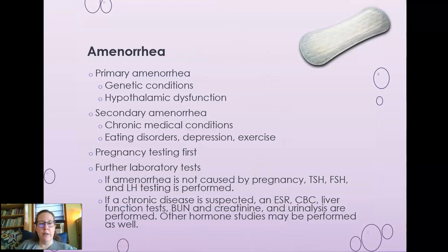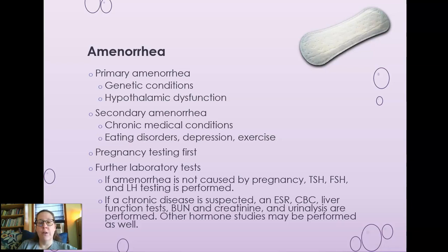Let's talk about amenorrhea — no period. You don't have a cycle, so you don't know when you're ovulating, and you're not going to be able to get pregnant. Primary amenorrhea has genetic causes and can also be due to hypothalamic dysfunction — if something has damaged your hypothalamus or pituitary, you could have primary amenorrhea.